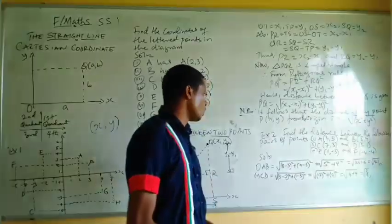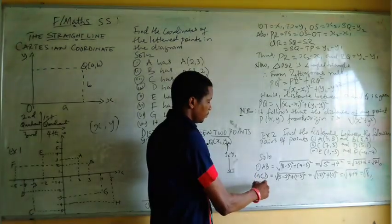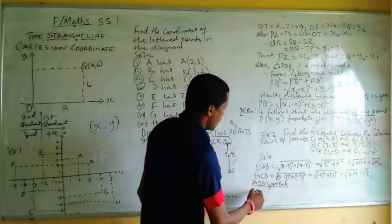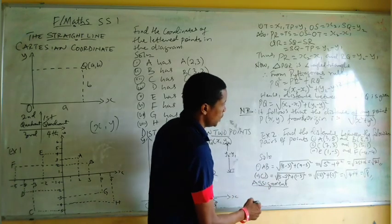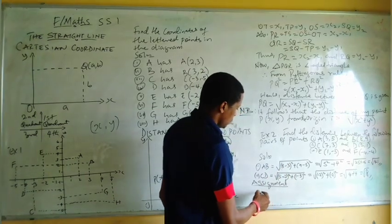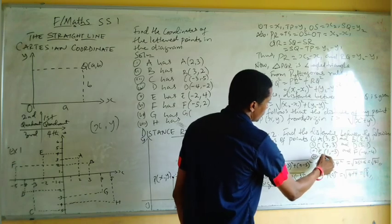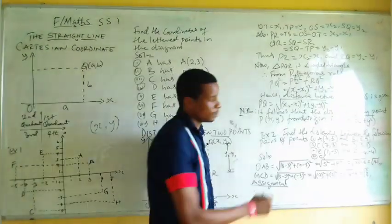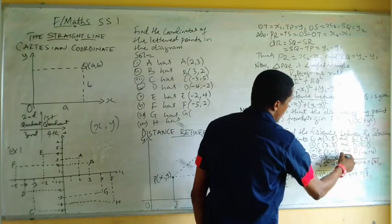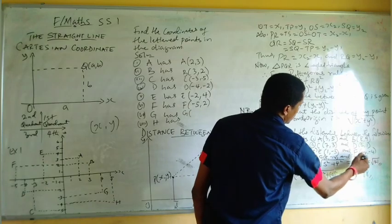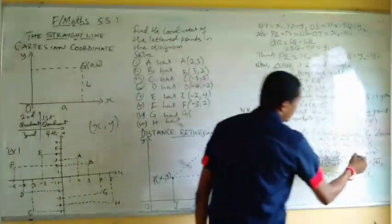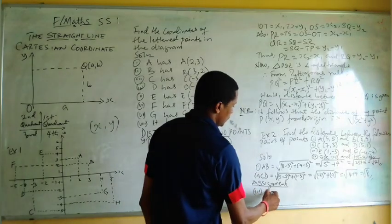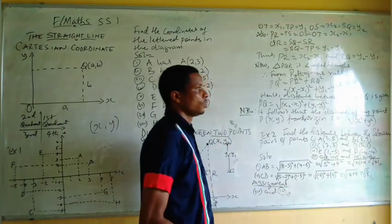I want you to take the third pair as your assignment, along with an additional one. Find the distance between points G and H, where G is (8, minus 14) and H is (minus 2, 10). So take problems three and four as your assignment.